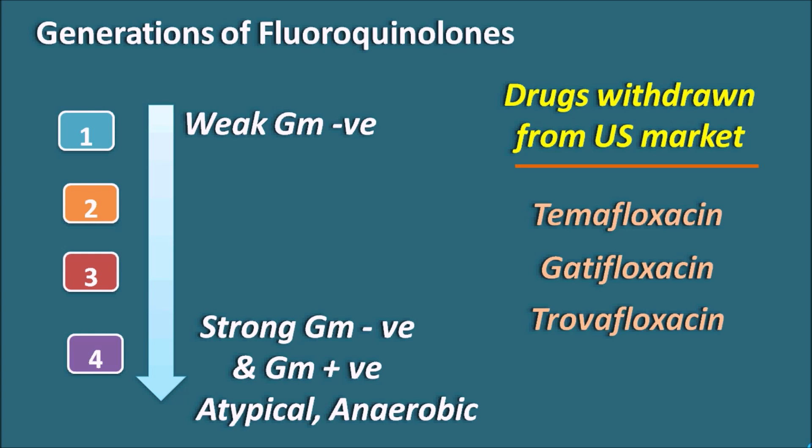This is quite opposite to the penicillins. Old generation penicillins are effective against gram-positive infections, but as we come to the new generation of penicillins, their activity extends towards gram-negative infections. Opposite to this, old generation fluoroquinolones are effective against gram-negative infections, but as we come to the new generations, their activity extends to gram-positive infections and even to atypical and anaerobic organisms.